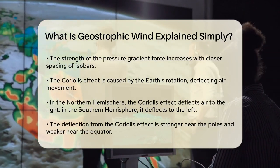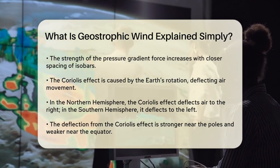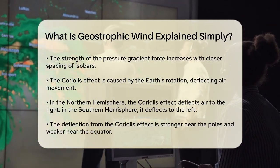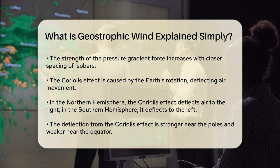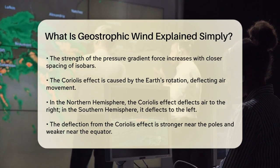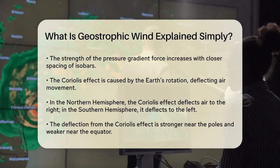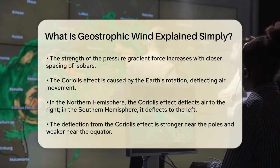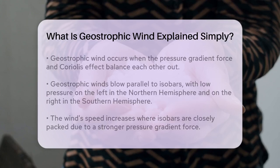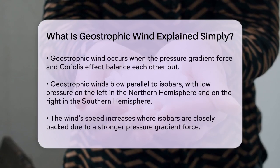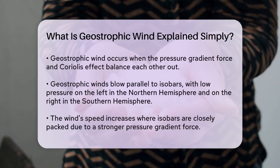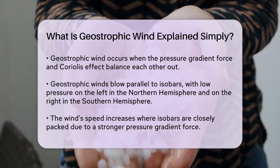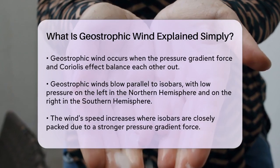When these two forces balance each other out, you get geostrophic wind. This wind blows parallel to the isobars, which are lines of equal pressure. So if you stand with your back to the wind, the low pressure will be on your left in the Northern Hemisphere, and on your right in the Southern Hemisphere.